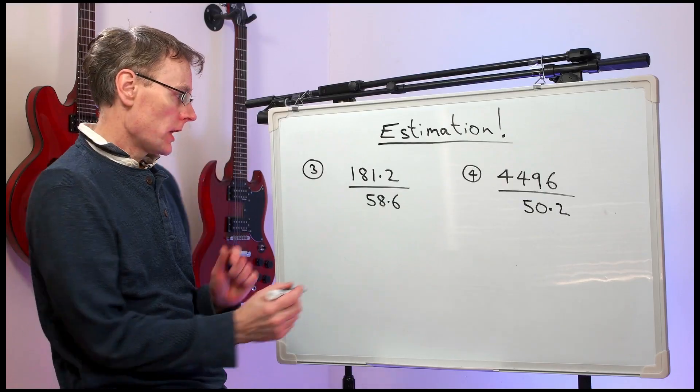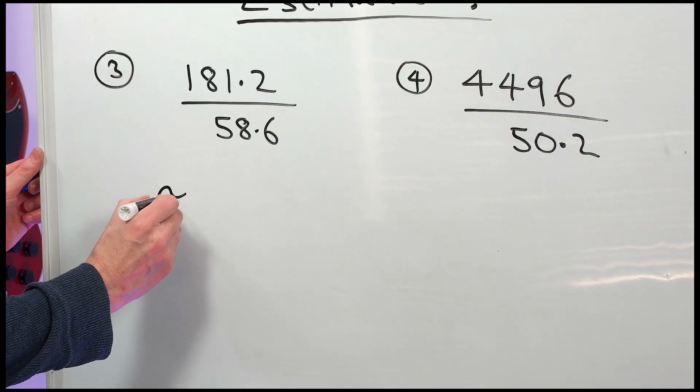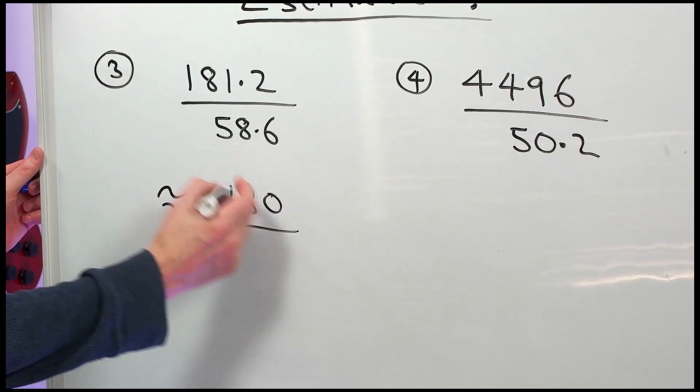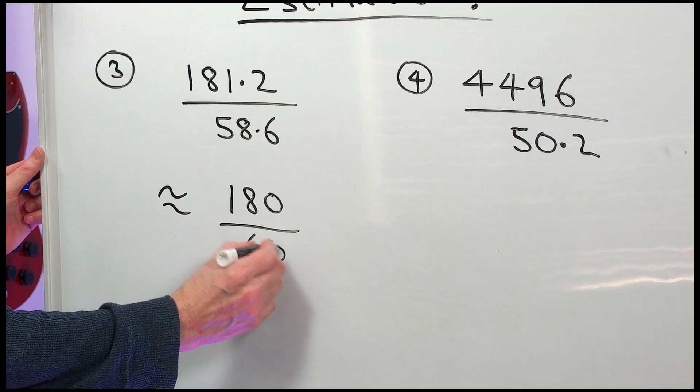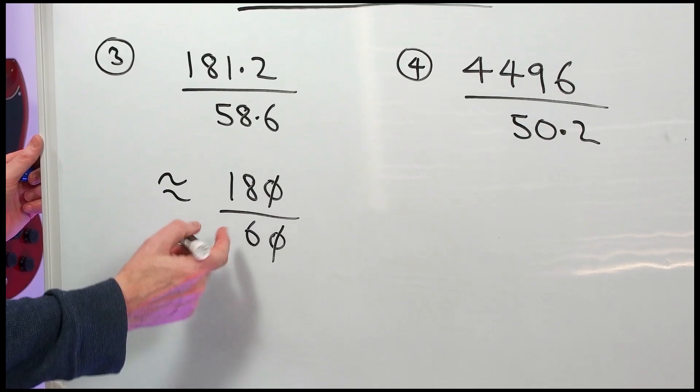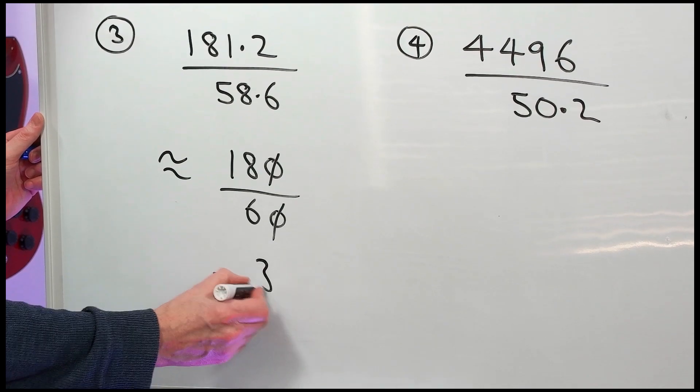OK, answers. Number 3. That is approximately equal to 180 divided by 60. You can cancel that down. Divide the top and bottom by 10. 18 divided by 6 is 3.